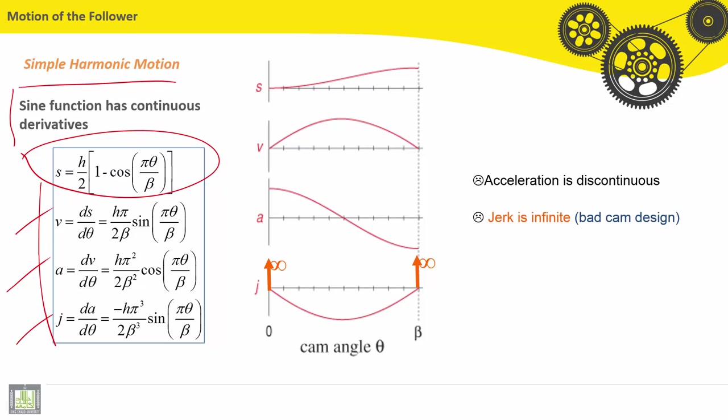We can see acceleration is discontinuous, passing from maximum to minimum. This is bad for design. Jerk is infinite, which is bad cam design too.